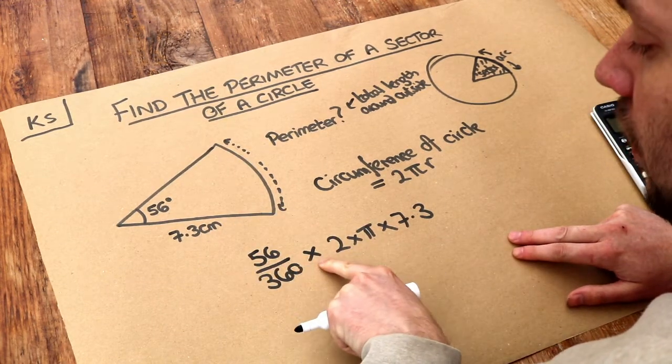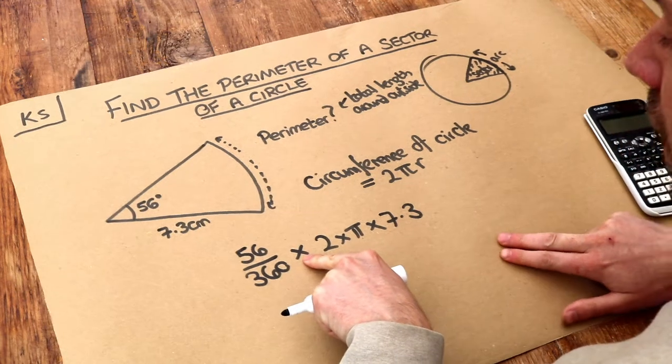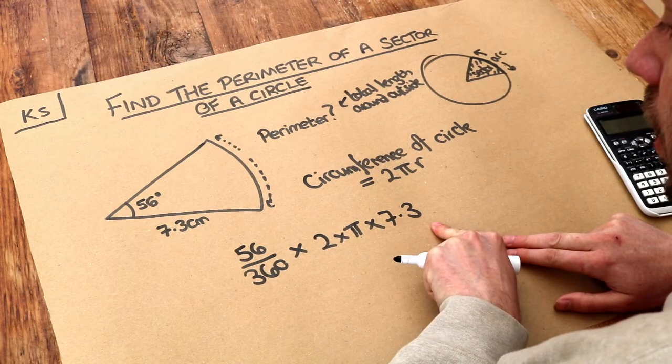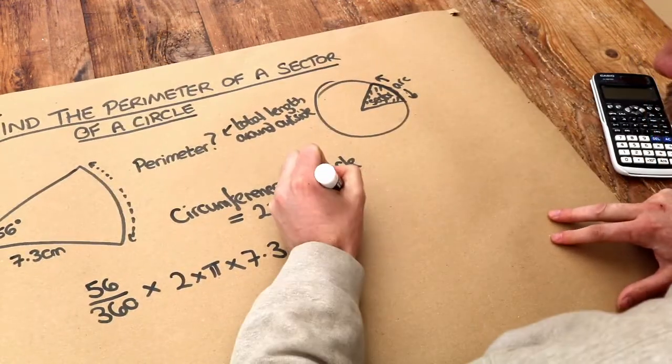Remember when we do a fraction of an amount, the word of we can replace with times. So it's 56/360ths of the circumference of a full circle. I'm just going to write the formula for that.